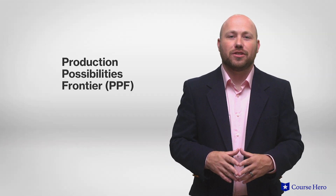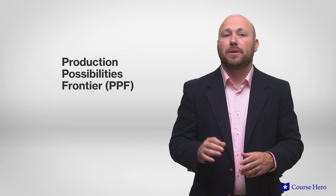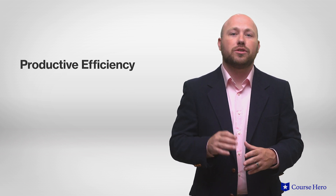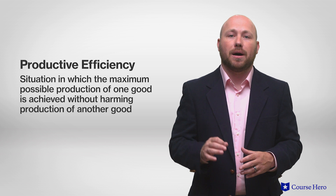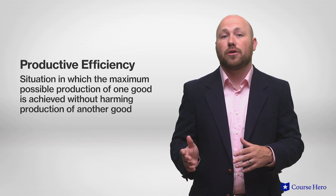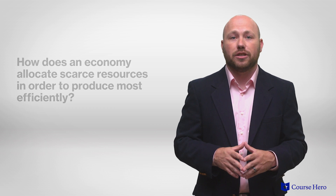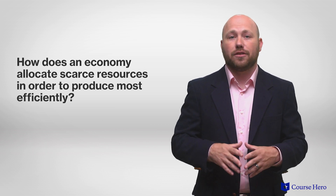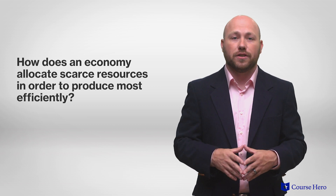There are various types of efficiency discussed in an economics course, and the PPF is used to illustrate productive efficiency, which is a situation in which the maximum possible production of one good is achieved without harming production of another good. The goal of using PPFs is to find out if society's limited resources are used in the most efficient way. Given limited available resources and the current available state of technology, how does an economy allocate their scarce resources in order to produce most efficiently?